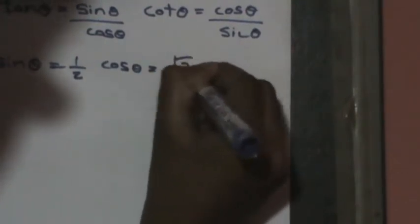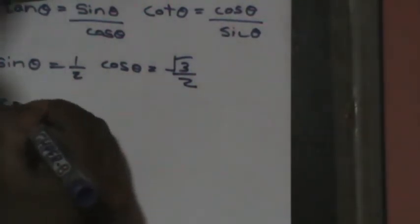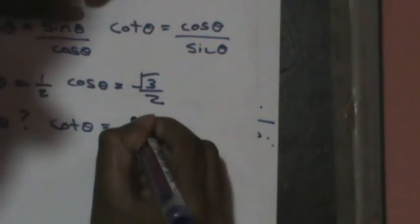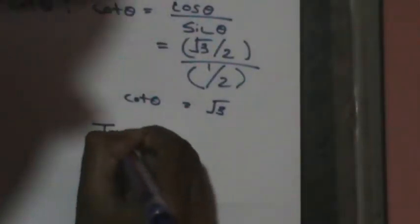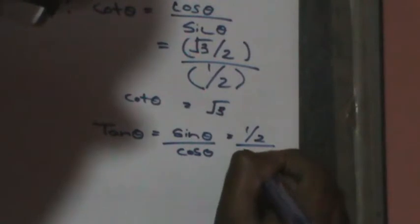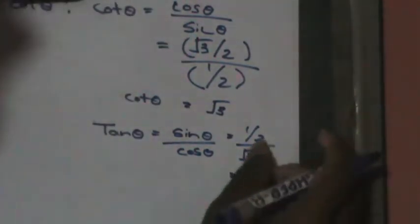Let's take a simple example: say sin θ equals one half and cos θ equals √3 over 2. To find cot θ, we substitute into the formula: cot θ equals cos θ over sin θ, so that is (√3/2) divided by (1/2). Similarly, tan θ equals sin θ over cos θ, which is (1/2) divided by (√3/2). That's just a simple example of applying the quotient identities.